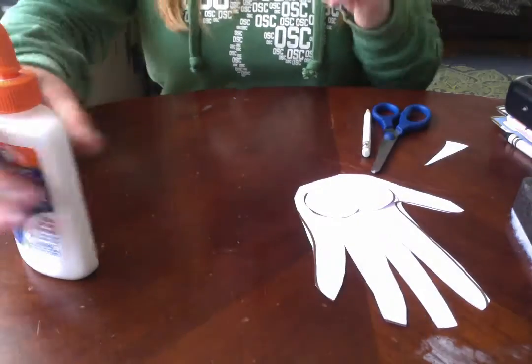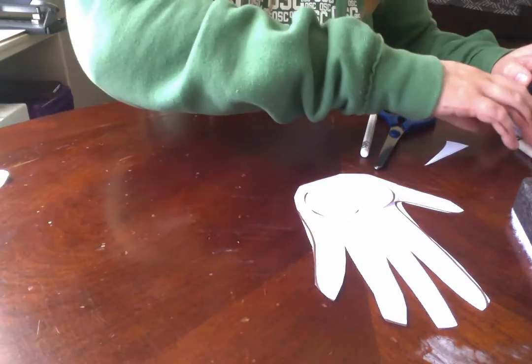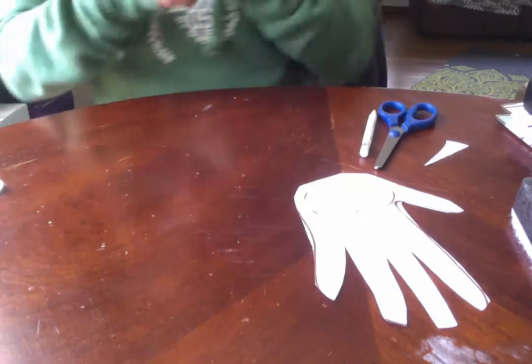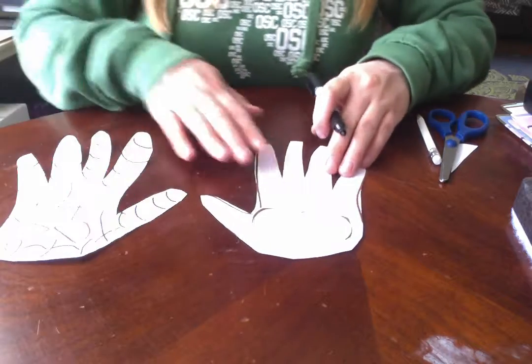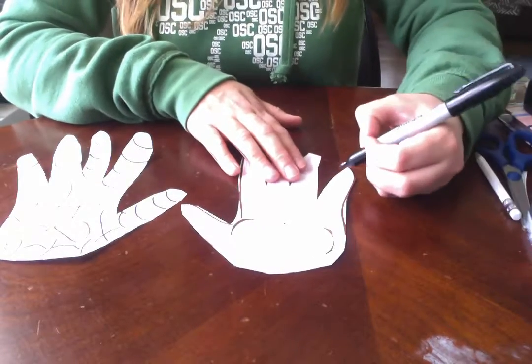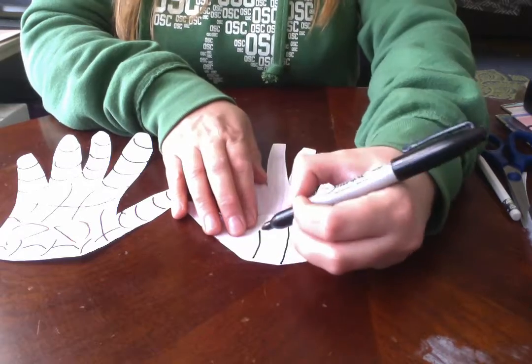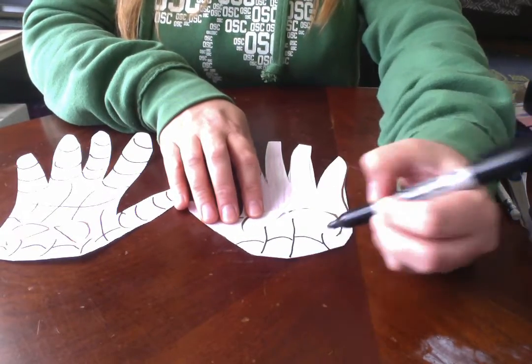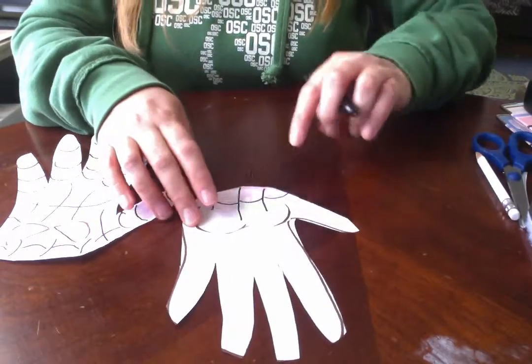So the next part is we're going to need a black marker or dark crayon. I'm going to use a black marker to make the web. So we could start with the top. We're going to need maybe three lines down. And you're just going to make kind of spider web like lines. I made curves and lines down.